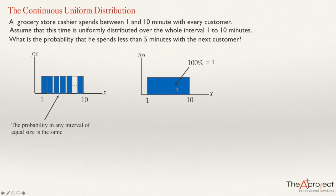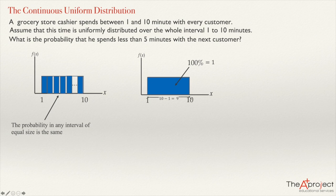What do we know about this rectangle? We know the base is between one and ten, so the base will be ten minus one, equal to nine. We know that the length of the base is nine. And the height is easy to compute: if the base is nine and the area is one, and we know that height times base equals area, then the height must be one over nine.